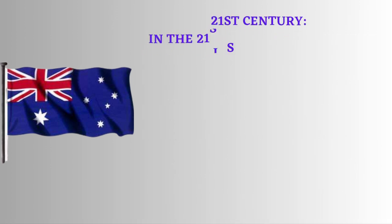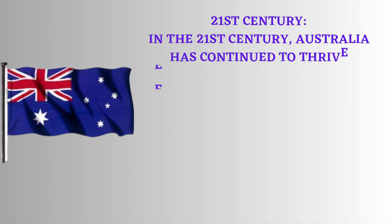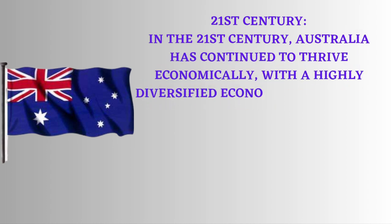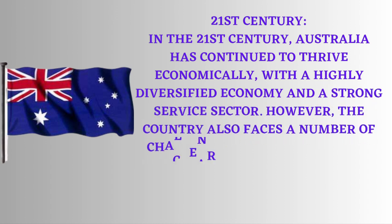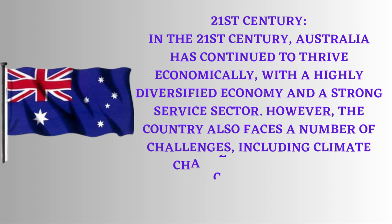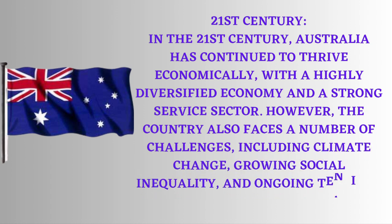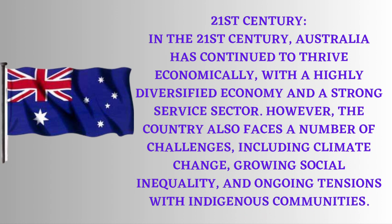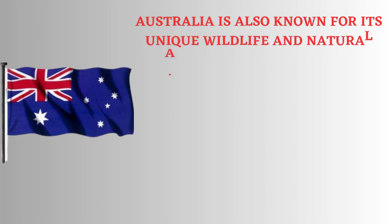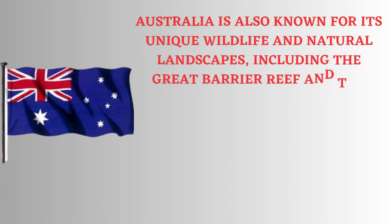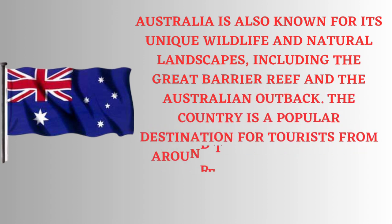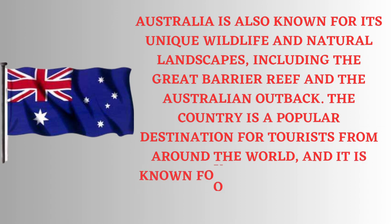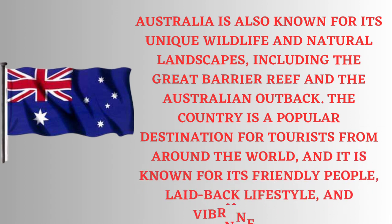21st Century: In the 21st century, Australia has continued to thrive economically, with a highly diversified economy and a strong service sector. However, the country also faces a number of challenges, including climate change, growing social inequality, and ongoing tensions with indigenous communities. Australia is also known for its unique wildlife and natural landscapes, including the Great Barrier Reef and the Australian Outback. The country is a popular destination for tourists from around the world, and it is known for its friendly people, laid-back lifestyle, and vibrant culture.